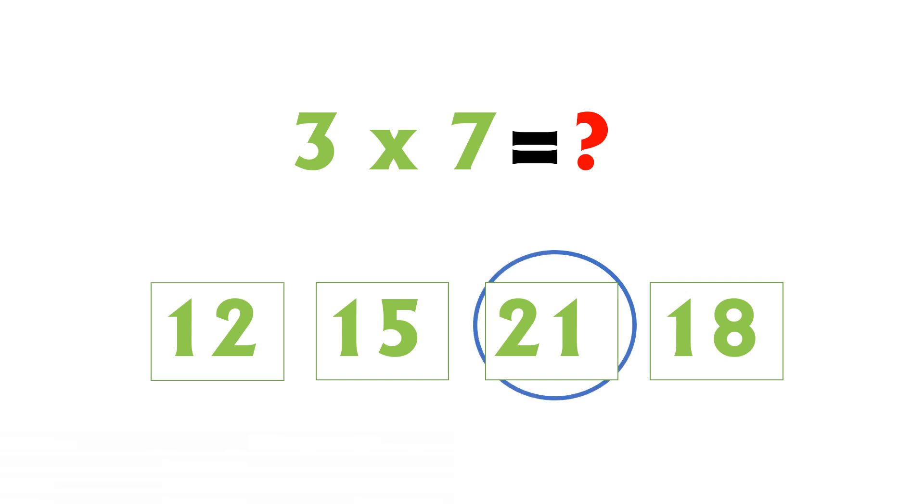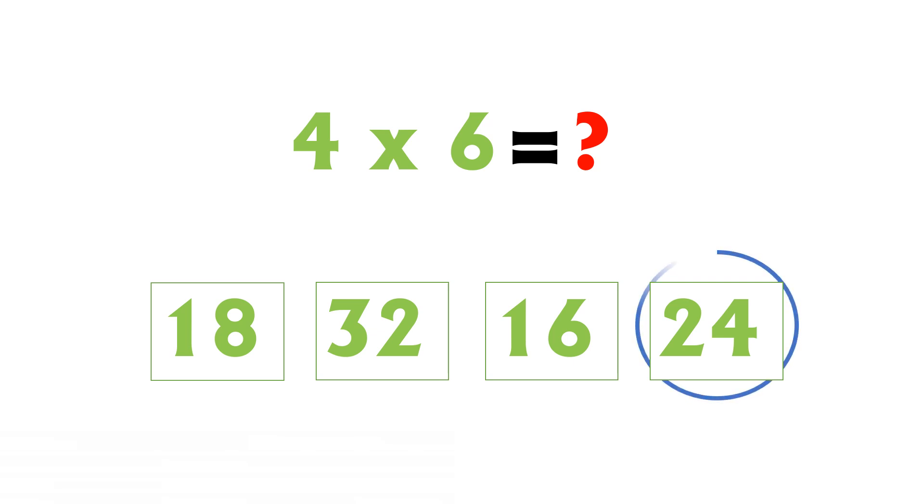3 sevens are 21. 4 multiplied by 6, the options we have 18, 32, 16, and 24. The correct answer is 24. 4 sixes are 24.